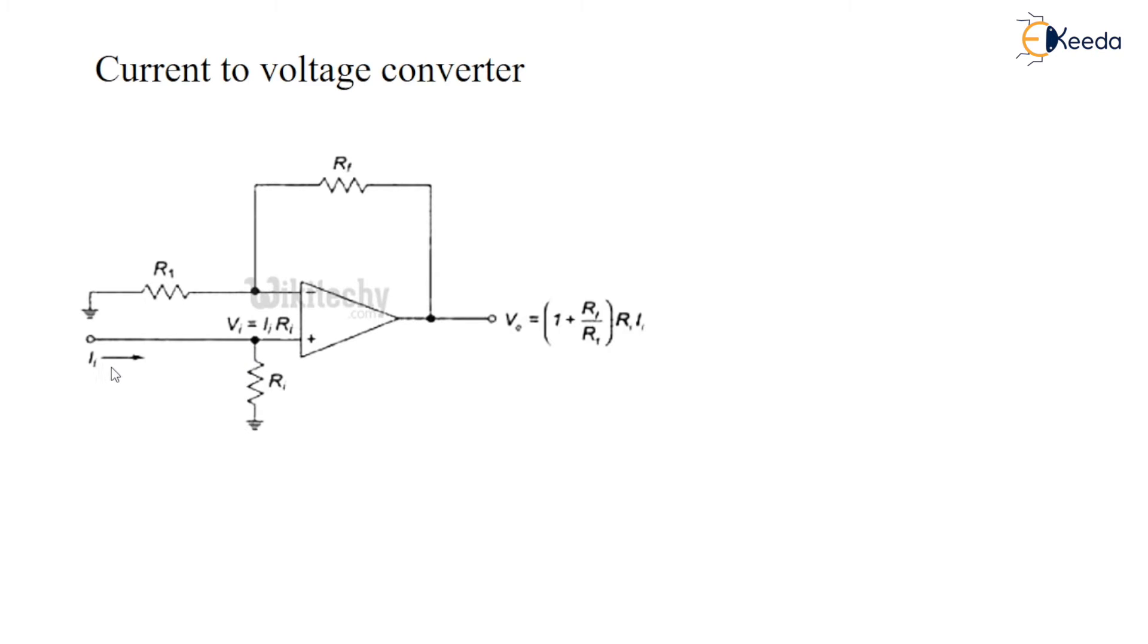Here I can see the input voltage is equal to VI divided by R1. So your VIN is equal to IIN into R.